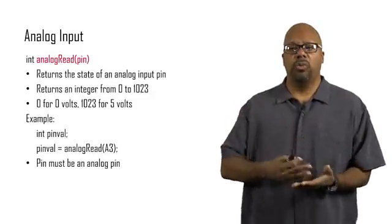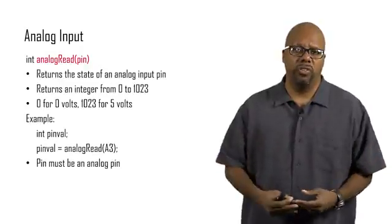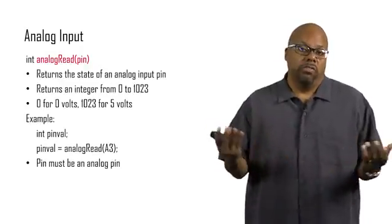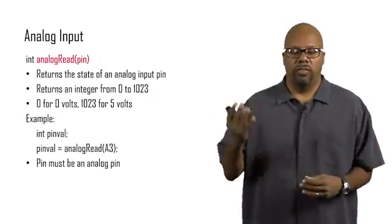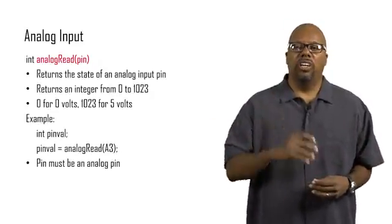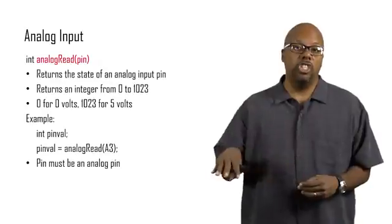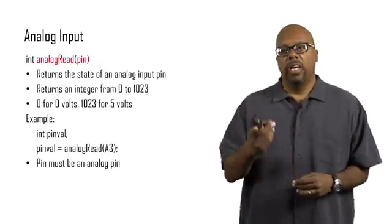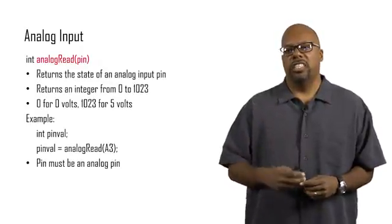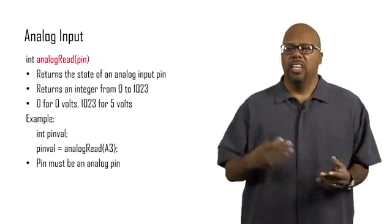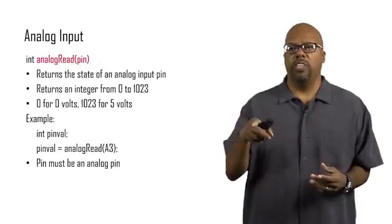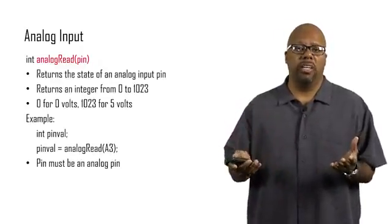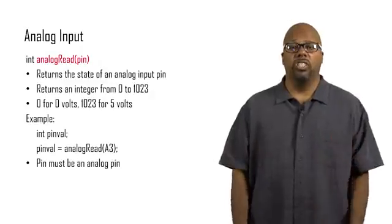For instance, say your voltage is right between 0 and 5 volts, so you get 2.5 volts. Then the number that this returns is going to be right between 0 and 1023, which is 512. So it's going to return you a digital number that corresponds to the analog voltage that it reads off of the pin. Again, it returns an integer. You can see in the example, pin value is an int, and I say analogRead A3. Remember that the pin that you pass as an argument to this has to be an analog pin, because it's analogRead, it won't work for a digital pin.